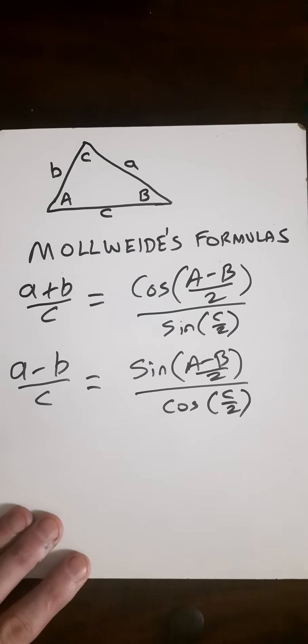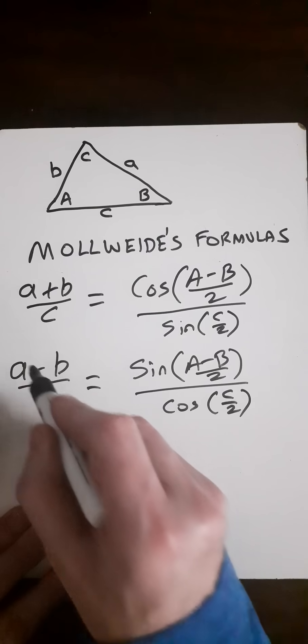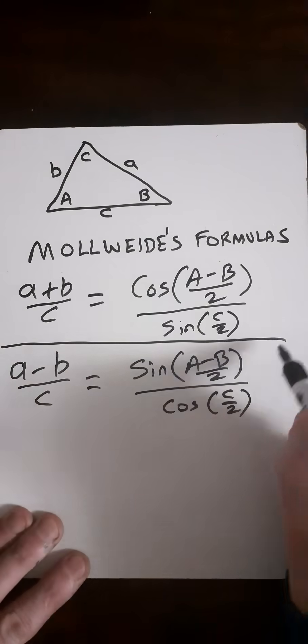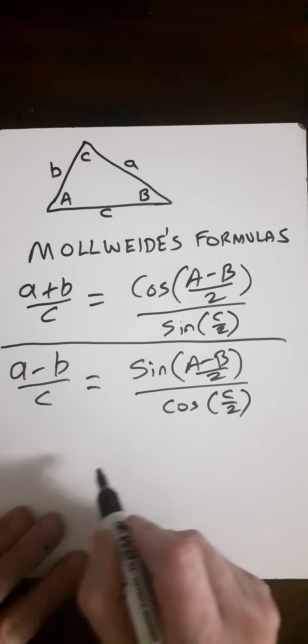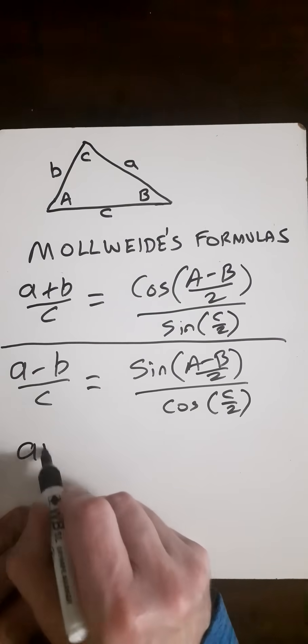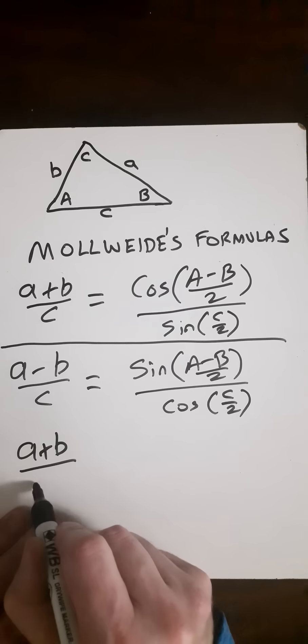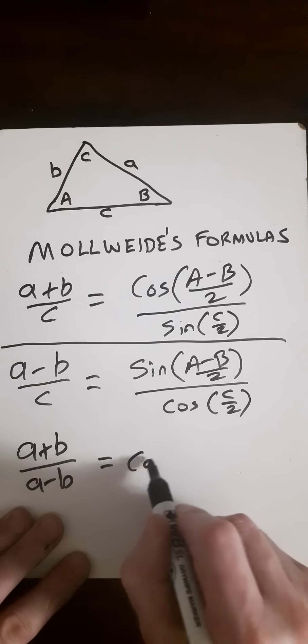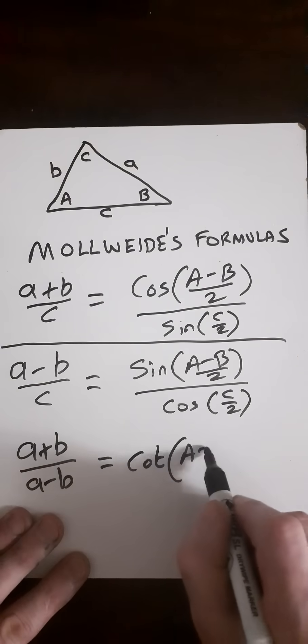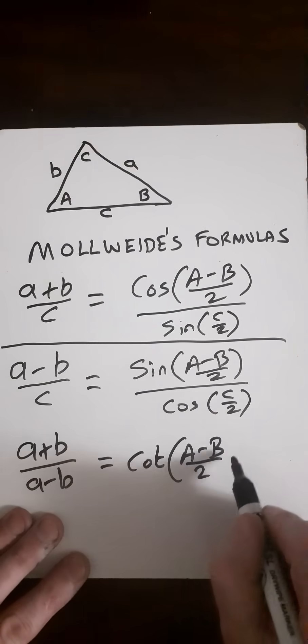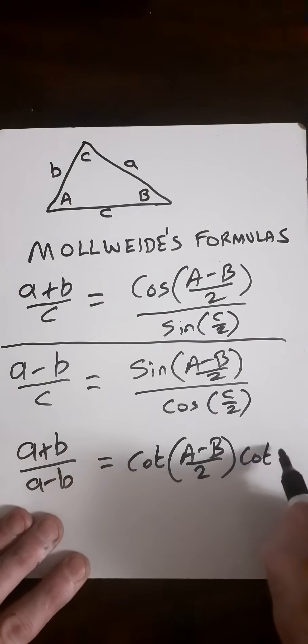Now what we can do here, we could also divide them. And if we divide them, we can simplify this out as (a+b)/(a-b) equals cot((A-B)/2) times cot(C/2).